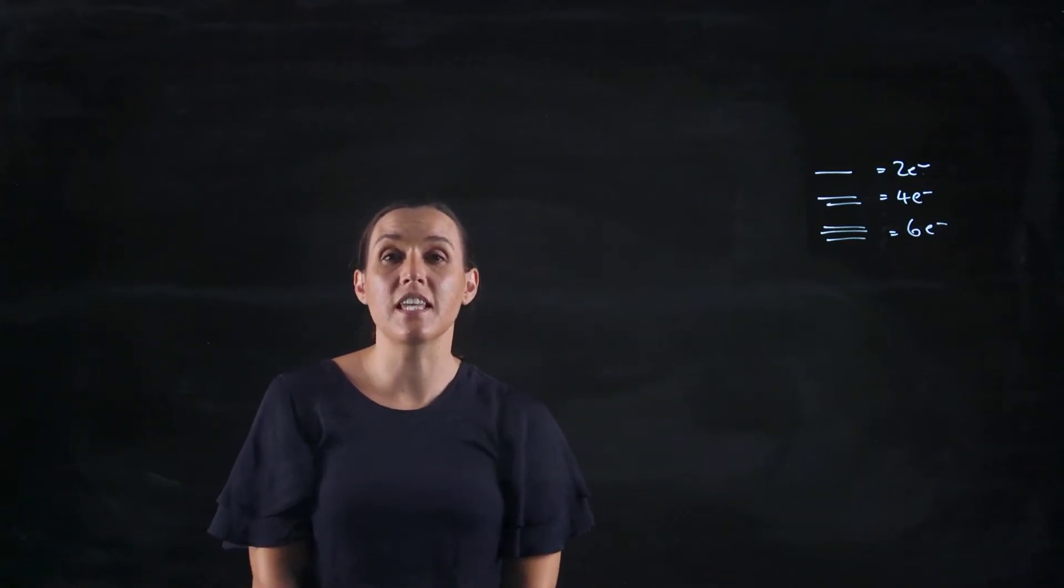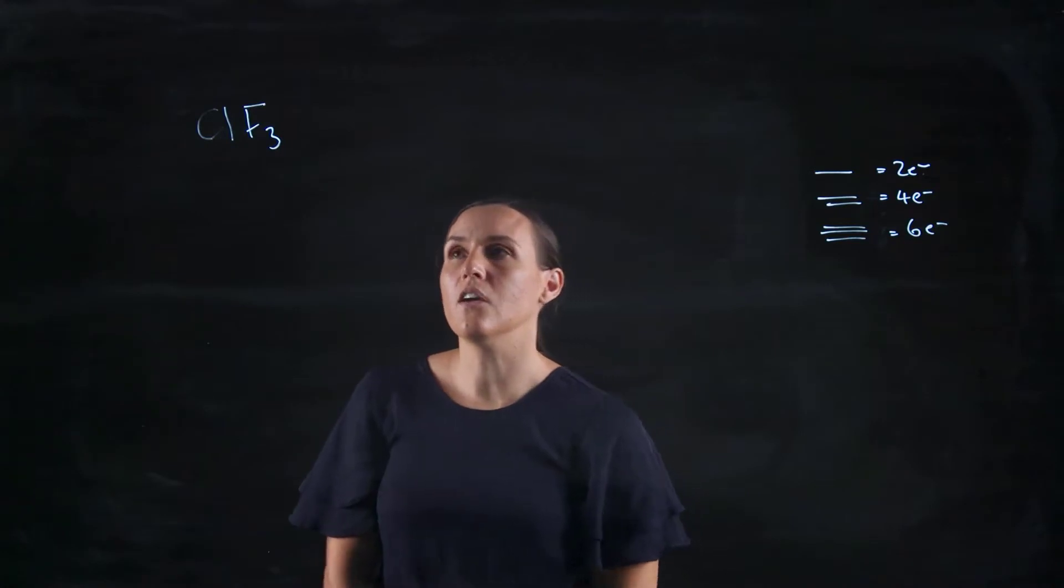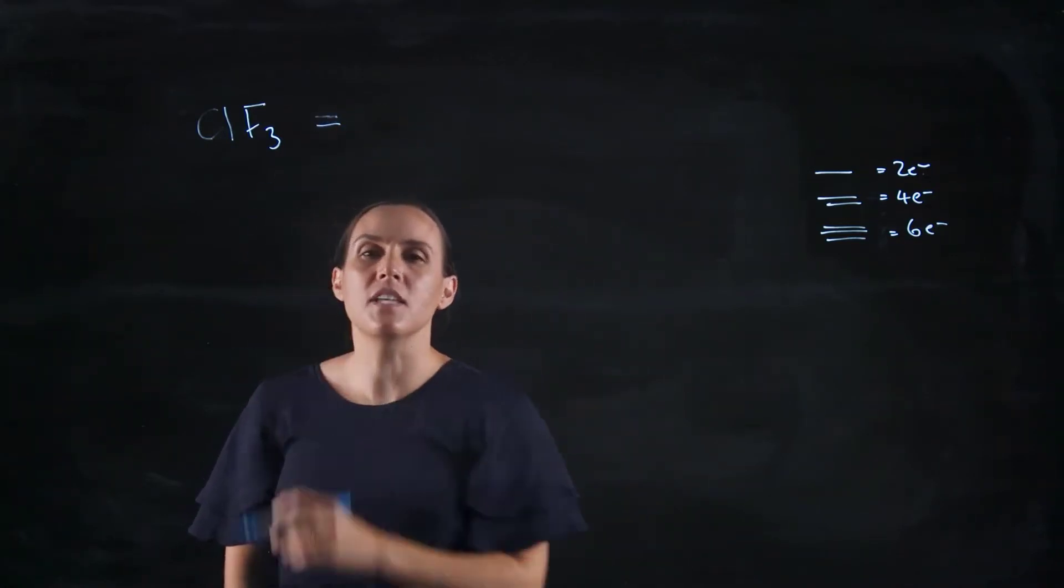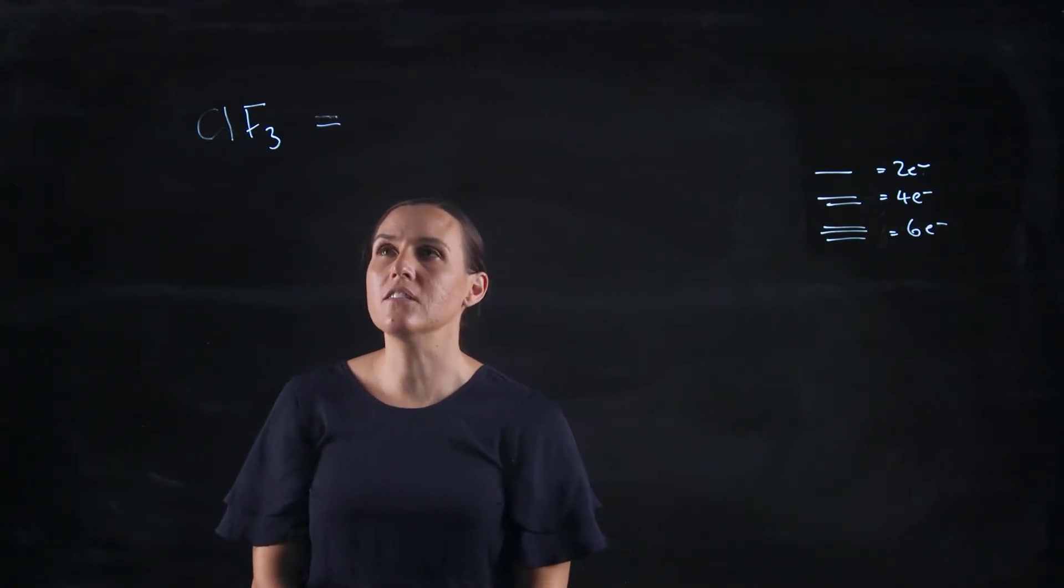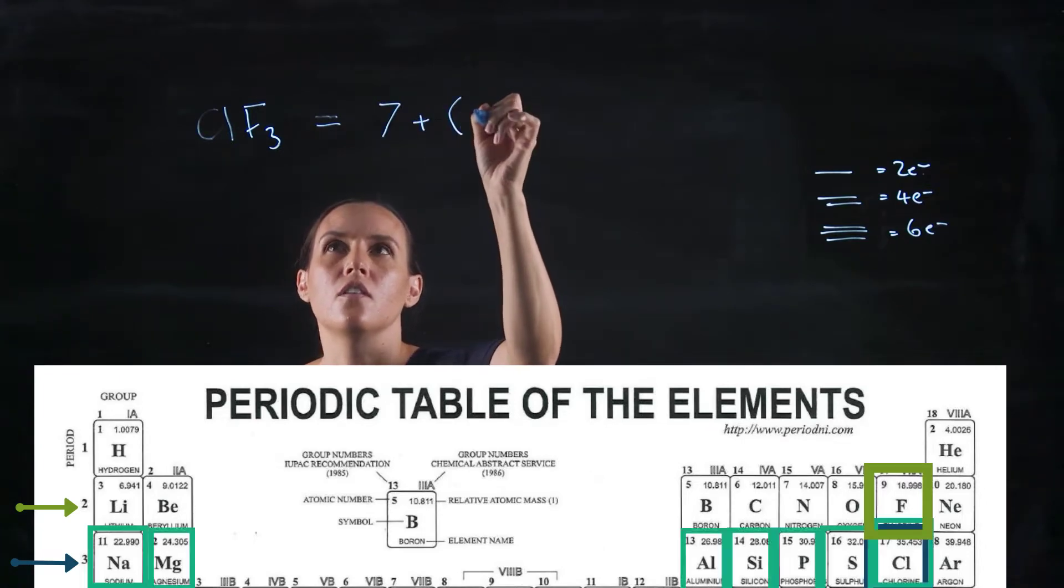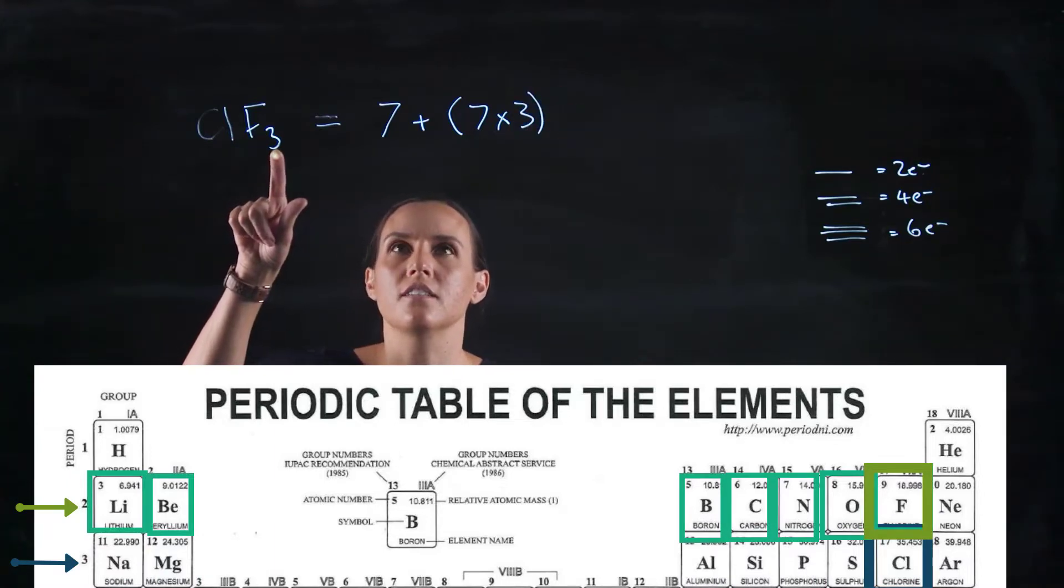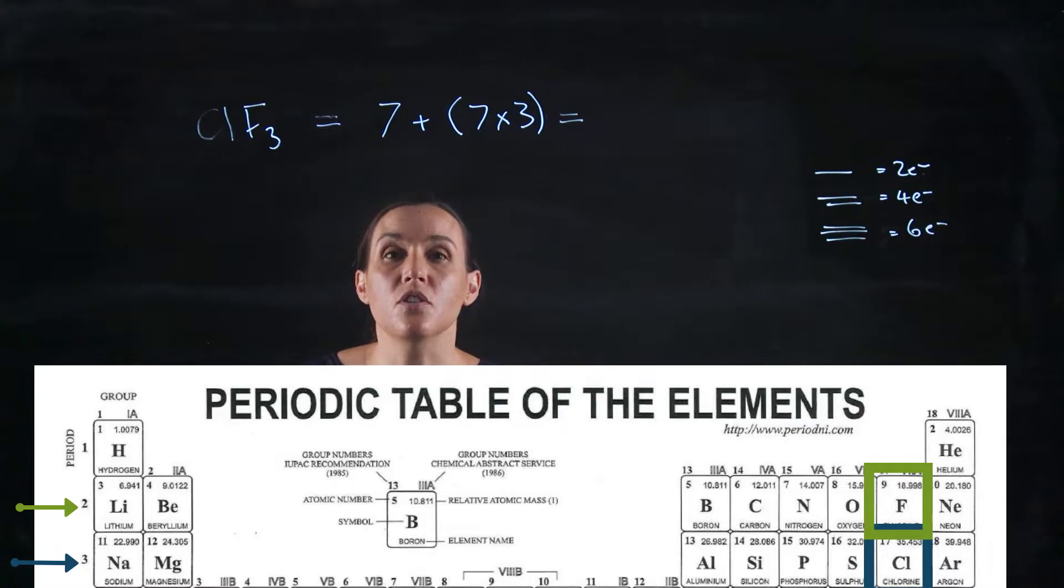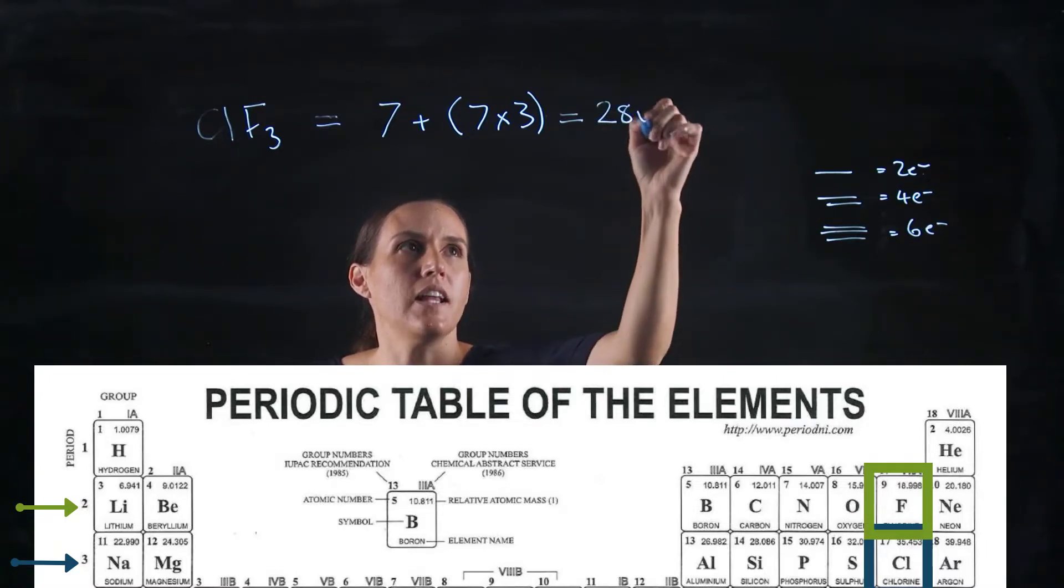So I'm going to go through ClF3. ClF3 has four atoms, and they're all going to have a valence electron of seven because they're all halogens, so chlorine would be seven. And then you've got seven for fluorine, and you've got three of those fluorines. There's no charge to add on to that one, so it would be just four times seven, which would give me 28 valence electrons.